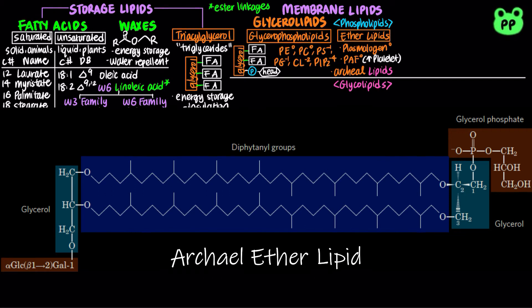In one example of archaeal ether lipids, two branched fatty acids called phytanyls are each attached to a glycerol group at both ends. One glycerol is linked to a disaccharide, whereas the other is linked to a glycerophosphate. Due to the disaccharide, this archaeal ether lipid can also be classified as a glycolipid, meaning sugar-containing lipid.